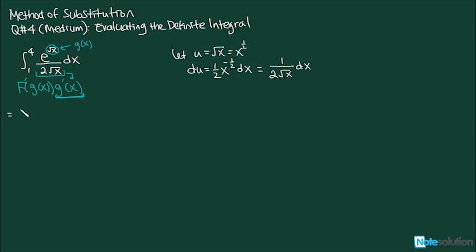Rearranging this will be 1/4 and we've got e raised to power of x, multiply by 1 over 2 root x and dx. We can have this as e raised to power of u and we can have that as du.